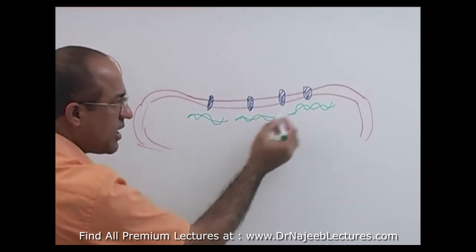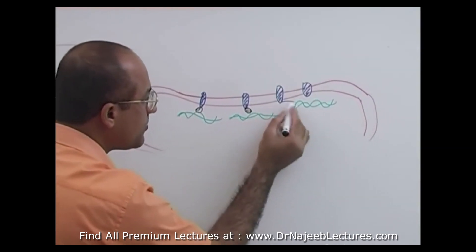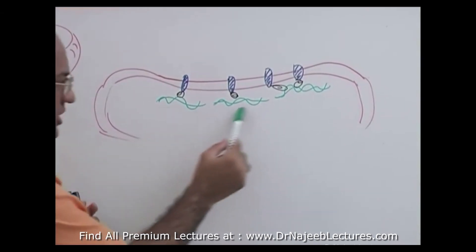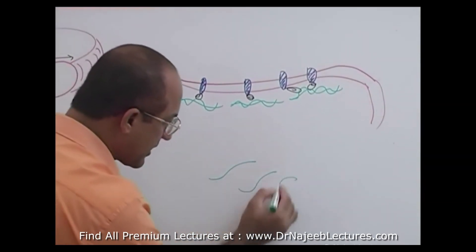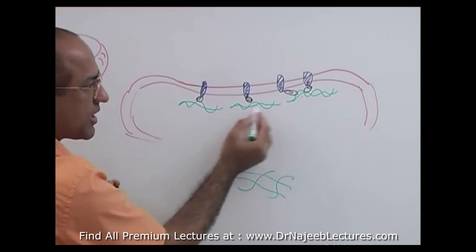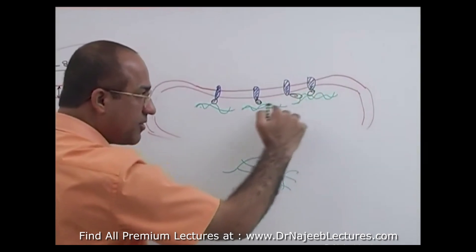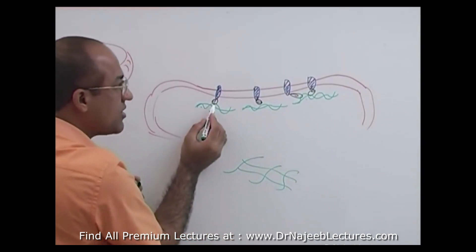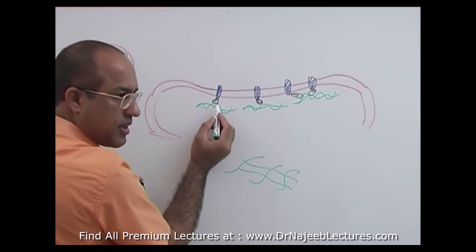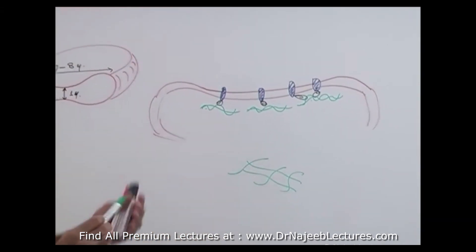These peripheral proteins make a network, and this network is held and attached to the membrane proteins. There is a network of proteins on the inner side of the RBC membrane, and this network is connected with the membrane through multiple proteins. What is the real purpose of this network?